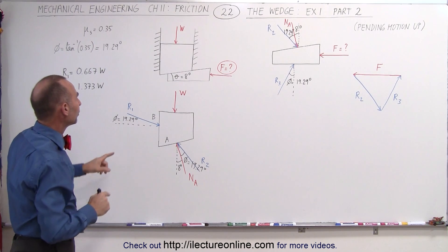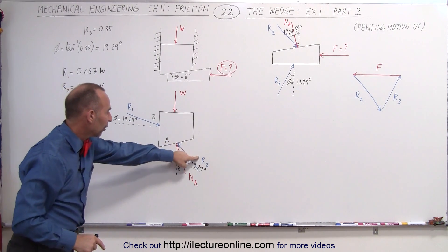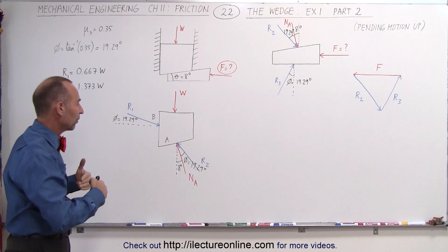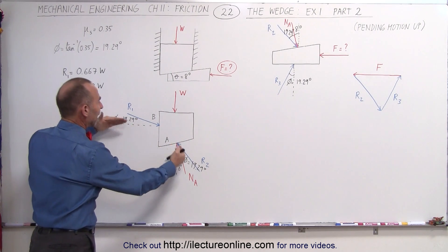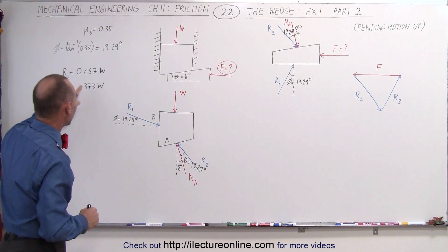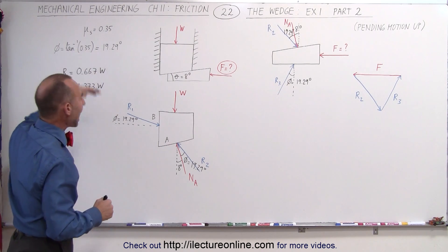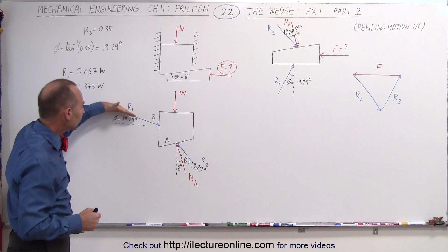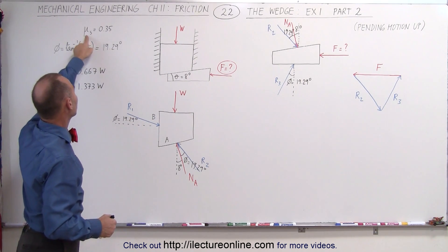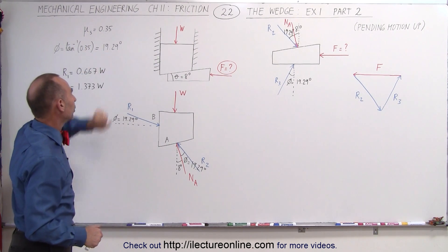On the previous video, we were able to calculate the forces acting on the block: the weight, R2, and R1. R1 and R2 are reactionary forces, which are a vector sum of the normal forces added to the friction forces. We found the values of those two reactionary forces in terms of the weight of the object, and we calculated the angle between the reactionary force and the normal force to account for friction, caused by the coefficient of static friction being 0.35. The angle was 19.29 degrees.